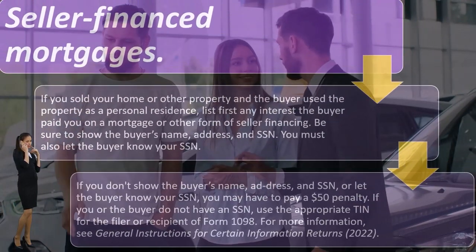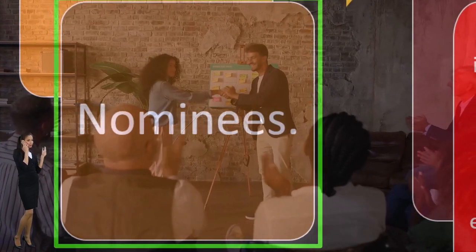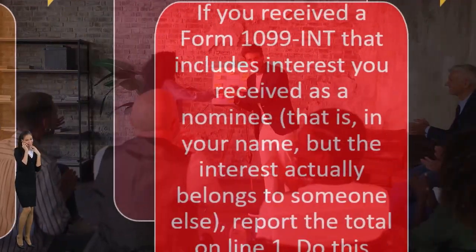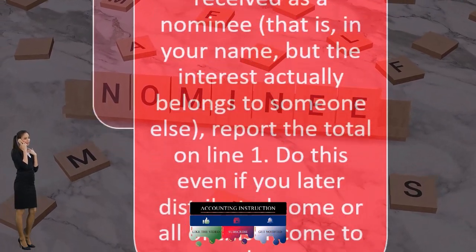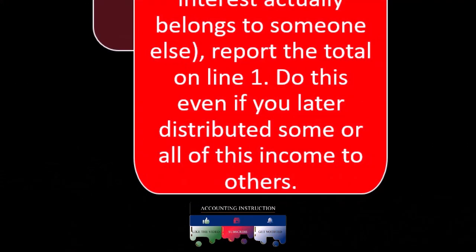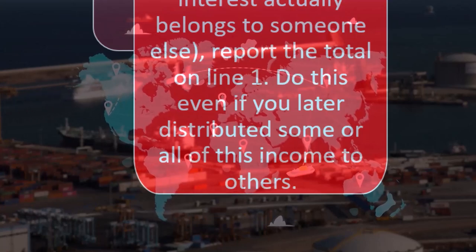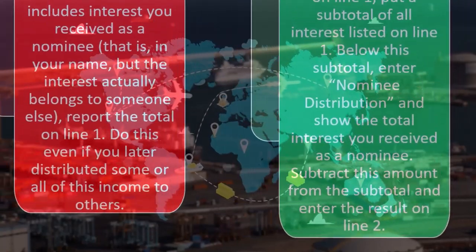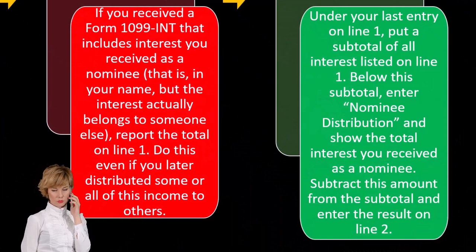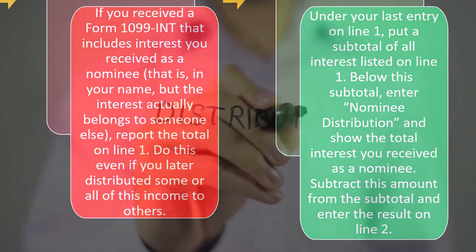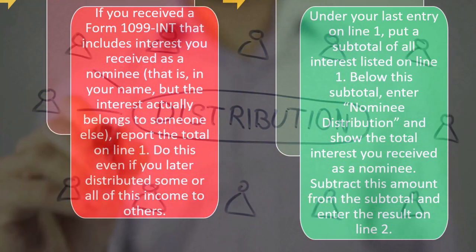For more information, see the general instructions for certain information returns 2022. Nominees — again, somewhat of an unusual situation. If you received a Form 1099-INT that includes interest you received as a nominee — that is, in your name, but the interest actually belongs to someone else — report the total on line one. Do this even if you later distribute some or all of this income to others. Under your last entry on line one, put a subtotal of all interest listed on line one. Below the subtotal, enter "nominee distribution" and show the total interest you received as a nominee. Subtract this amount from the subtotal and enter the result on line two.